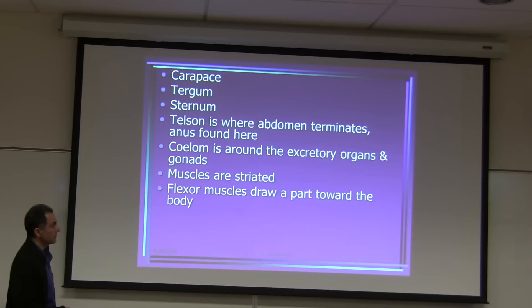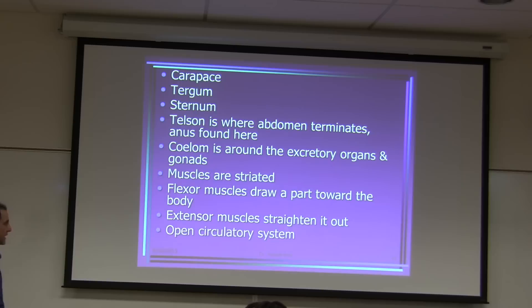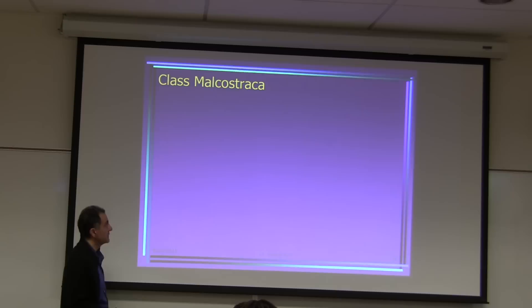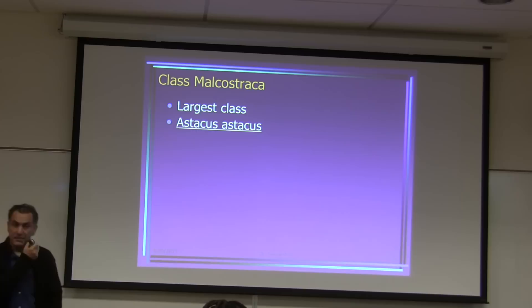Flexor muscles draw the animal toward the body, and extensor muscles make the animal straight — that's how they move. They have an open circulatory system, and their blood contains hemocyanin. Class Malacostraca is the largest class in crustaceans, and Astacus astacus is the specimen we have in the lab — you can dissect it any time you ask.